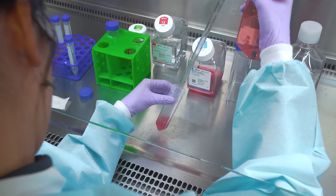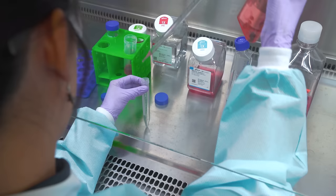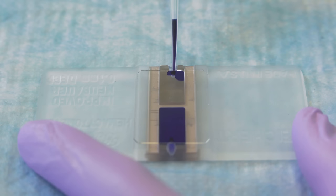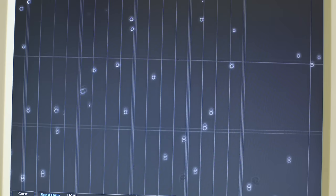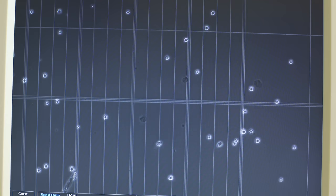Remove a small sample for cell counting. Trypan blue is used when counting cells to indicate the ratio of live to dead cells. The stain turns dead cells blue, but healthy cells with an intact membrane will remain white or colorless.